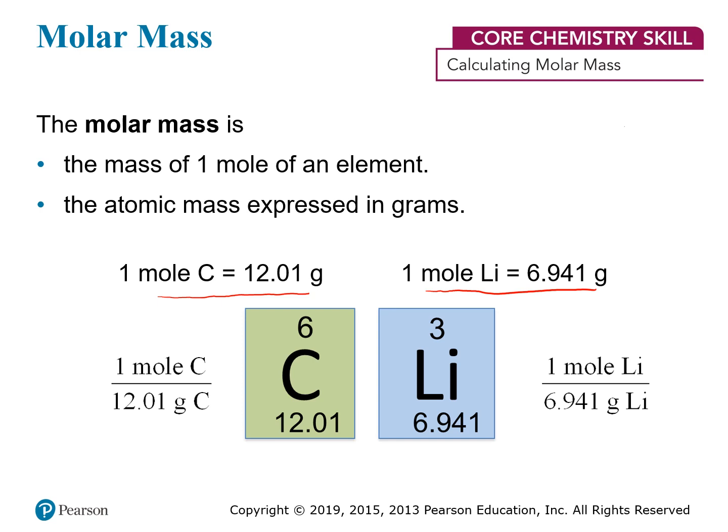The masses given on the periodic table are actually averaged over all the different isotopes. This is useful because when you weigh out a certain amount of a substance like carbon or lithium, you're naturally weighing out a mixture of different isotopes according to their natural abundance. So the average is naturally reflected in the mass you weigh out for a one mole quantity.